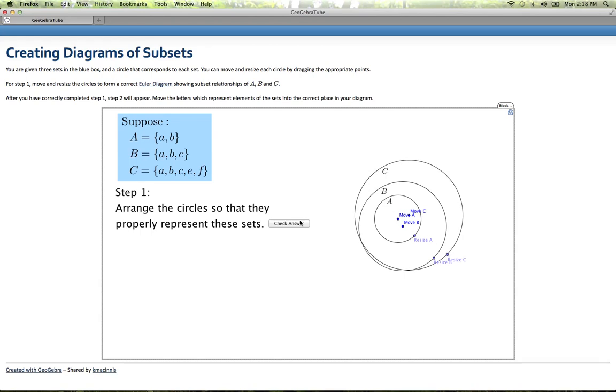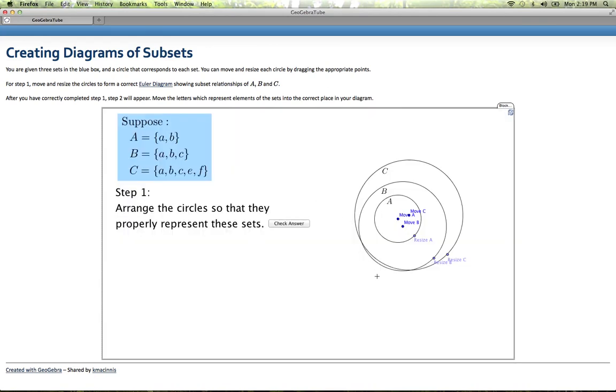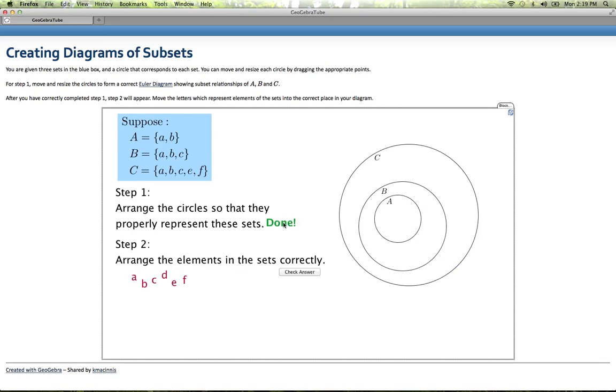I can click check answer to see if this is correct. It tells me I need to try again. And notice I didn't make my set C quite large enough. There's a little bit of B here poking out, so I'll resize that to be a little bit bigger. And now click check answer. So I've got step one done correctly.